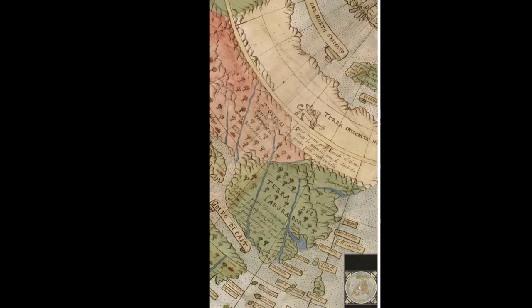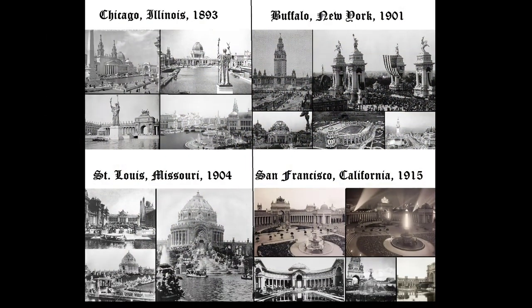Here we have pictures of Chicago, 1893. What happened to these beautiful buildings? Buffalo, New York, 1901 — what beautiful architecture. San Francisco, 1915. St. Louis, Missouri, 1904. This looks like we are somewhere across the seas. This does not look like America — not the architecture of America from what they told us.